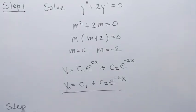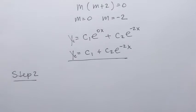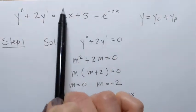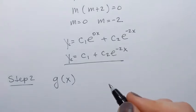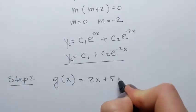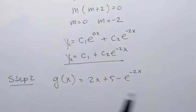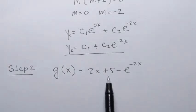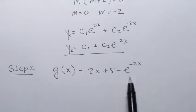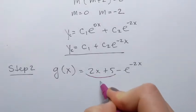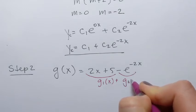In the second step, we obtain a particular solution yp. It has the same form as the function g(x), the right-hand side of the non-homogeneous equation. So g(x) equals 2x plus 5 minus e to the power negative 2x. I can think of it as g1(x) plus g2(x) — a linear function and an exponential function.